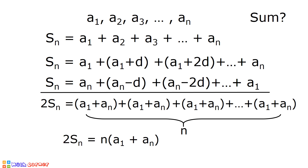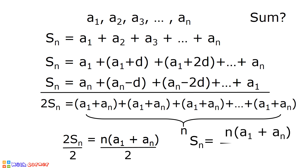On the left side we have 2 times S sub n. To solve for S sub n, we will divide both sides of this equation by 2. 2 S sub n divided by 2 is equal to S sub n. And we have S sub n is equal to n times the quantity a sub 1 plus a sub n, divided by 2.